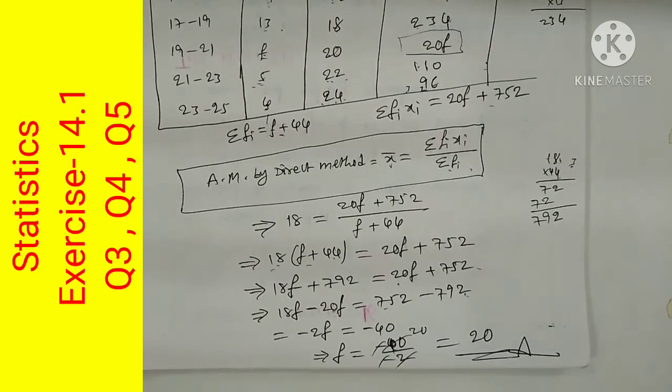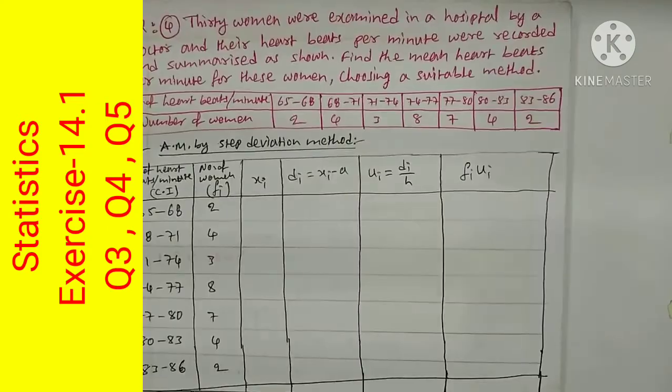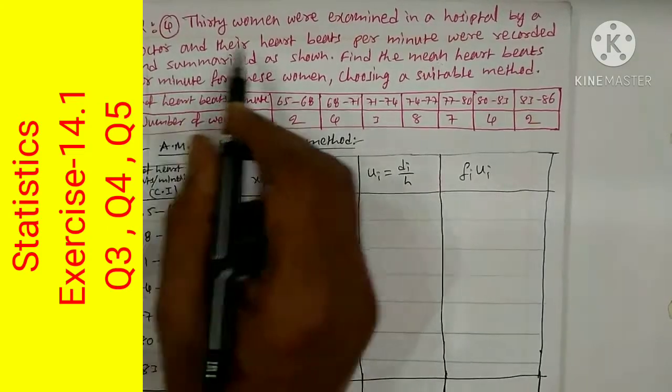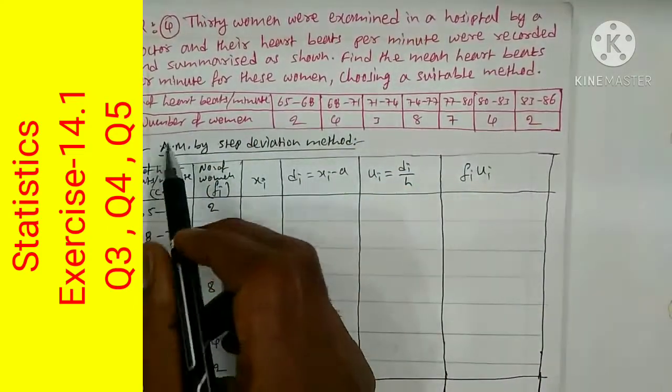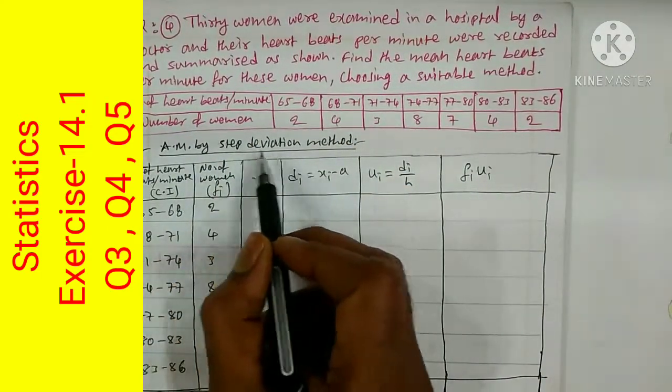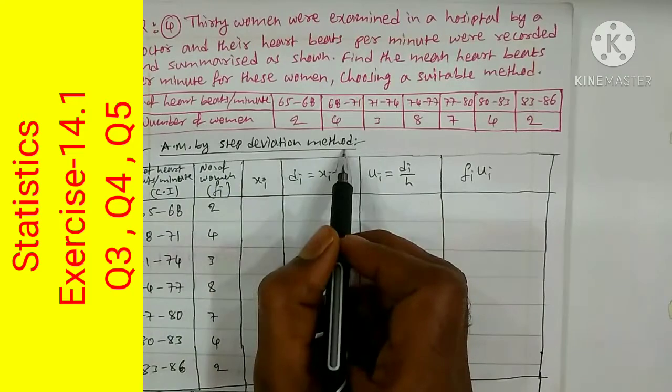This is the unknown frequency. Now question number 4 — for this question I am using the step deviation method.